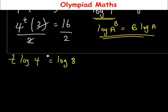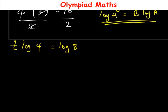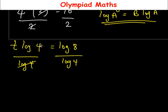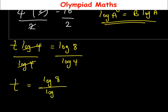From here we divide both sides by log(4). Log(4) divided by log(4) cancels, so t standing alone is equal to log(8) over log(4). This can be simplified further.